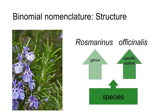Before finishing this lecture, let's take a closer look at the construction of the Latinized binomial. It's important for you to understand this because you'll be using binomials throughout the semester and are expected to learn them for most of the plants on our class list. Let's use the evergreen shrub rosemary, Rosmarinus officinalis, as an example. In its simplest form, the binomial system consists of three main parts: the genus and the specific epithet, and together the genus and specific epithet are referred to as the species. So in our example, Rosmarinus is the genus and officinalis is the specific epithet.